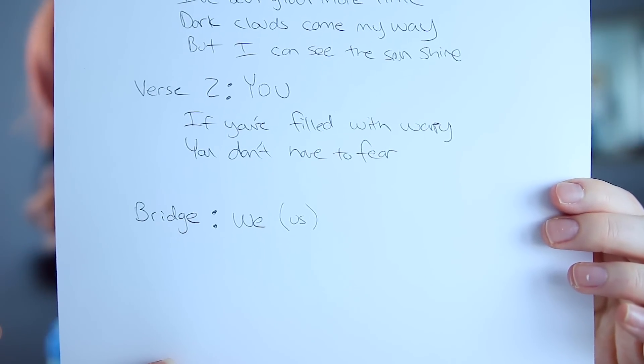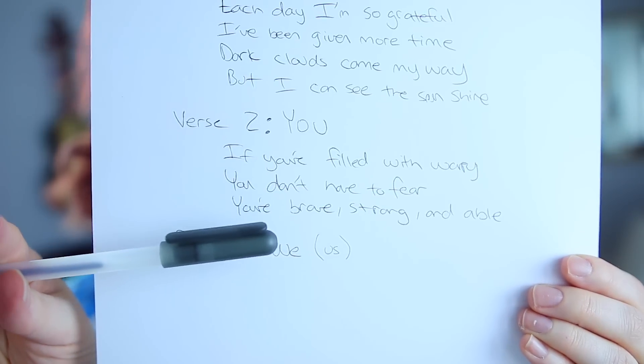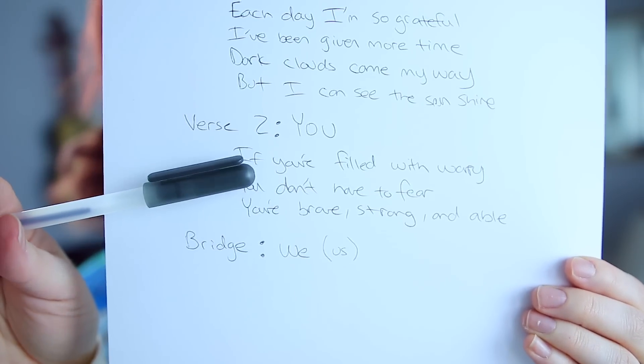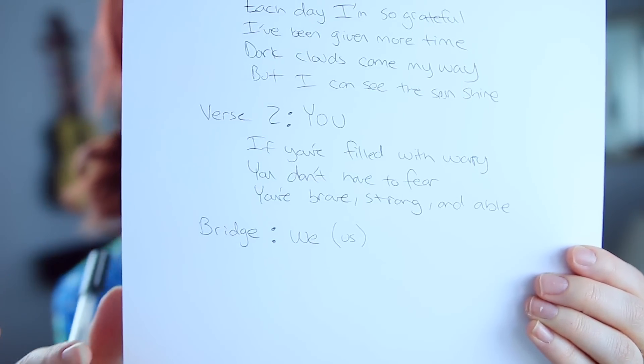Now verse 2 — we talk about you. Line 1: if you're filled with worry. Line 2: you don't have to fear. Line 3: you're brave, strong, and able. And line 4 will rhyme with line 2 using the word 'tears' — not 'tear' — so: there's no need for tears.